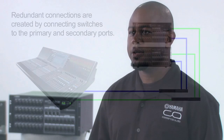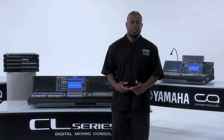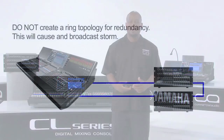If you wish to create a redundant network system, you can do so by putting two switches within the network. One switch would be connected to the primary network, and the second switch would be connected to the redundant secondary network. Please keep in mind that a ring style topology cannot be used with the CL series digital mixer.